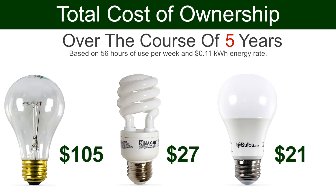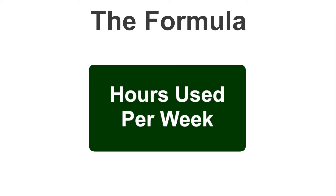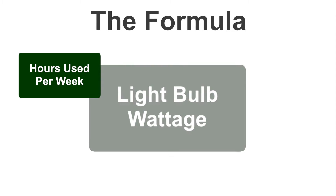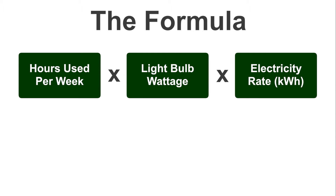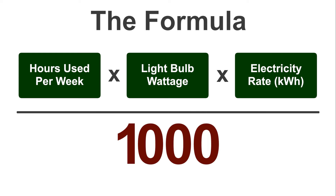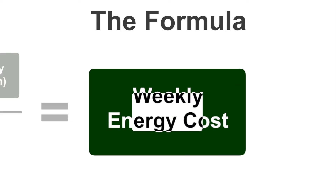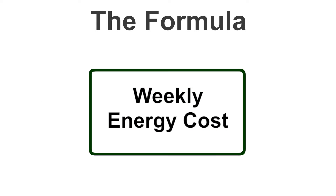Now think about how many light sockets you have. It's easy for us to show a number, but how do we get there? The formula to find the cost of ownership for any bulb is not that complicated. Multiply the hours you use your lights per week by the light bulb wattage, then multiply that by your electricity rate. Now divide that number by 1000, because the electricity rate is by kilowatts per hour. That's your weekly energy cost.